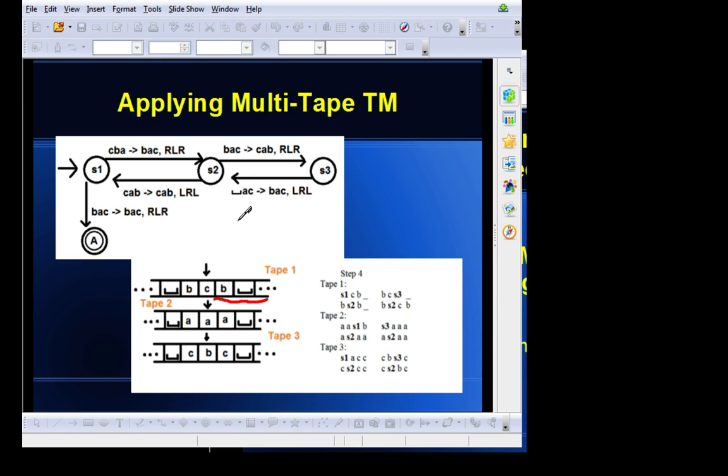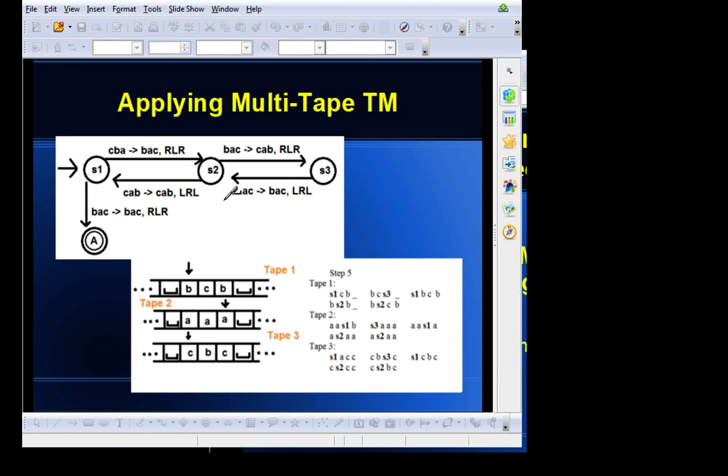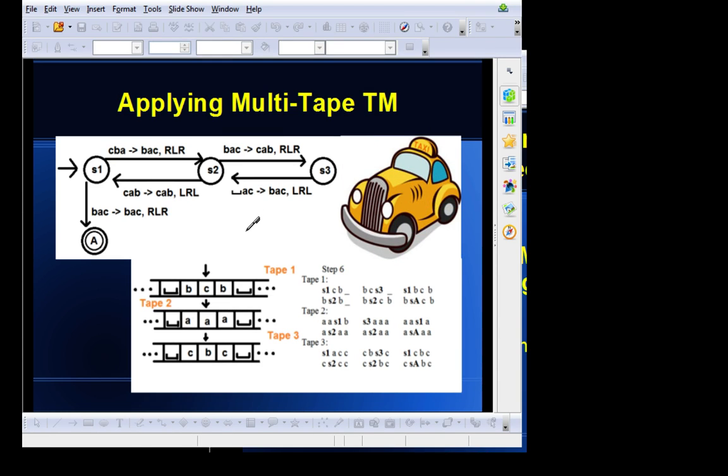And going on, we can see that we keep transitioning back to state 1 eventually. And with state 1, we transition BAC, not changing to BAC, but it's going right, left, and right to the sub-state. And at the sub-state, which we're now finished, we can see that the heads together will spell CAB.